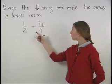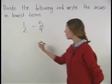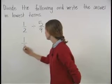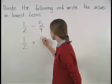So here, one half divided by five ninths can be rewritten as one half multiplied times nine fifths.